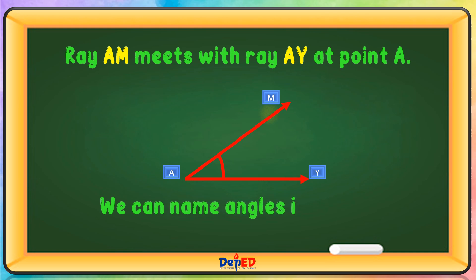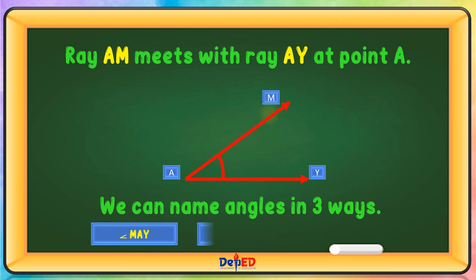We can name angles in three ways: Angle MAY, Angle Y-A-M, and Angle A.